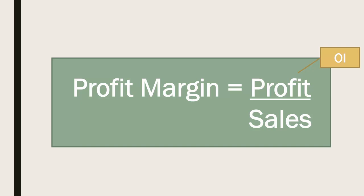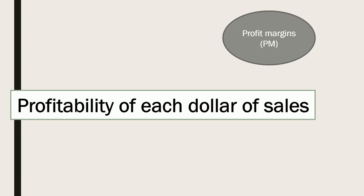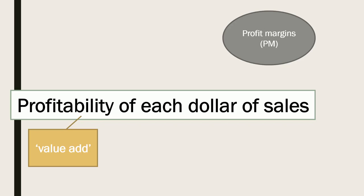We define profit margin as operating income after tax divided by sales. The profit margin focuses our attention on the profitability of each dollar of sales. The more profit a firm can achieve from each dollar of sales, the greater the value add to equity investors.